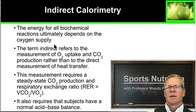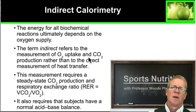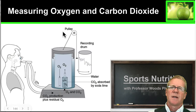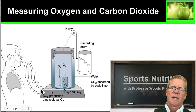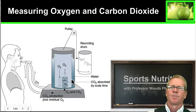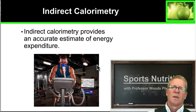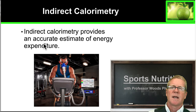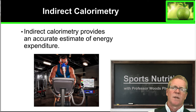Indirect calorimetry looks at the biochemistry of what's going on — it refers to the indirect measurement of oxygen and carbon dioxide rather than the direct measurement of heat. The athlete takes in oxygen and blows out carbon dioxide and residual oxygen, which is measured. Through this, we can indirectly estimate both the substrates being used and the amount of energy being burned. This is a typical indirect calorimetry setup — it can give a pretty accurate estimate of energy expenditure.